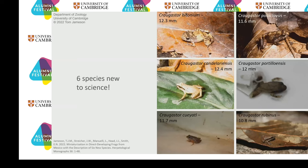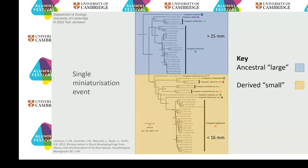What else did our research reveal about these frogs' evolution? We found that all our small species of frog are more closely related to each other than they are to any of the large species — they all share one single common ancestor. This suggests there was a single miniaturization event in the history of this group: there was an ancestral small frog that then diversified into all these different small forms around Mexico.